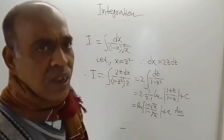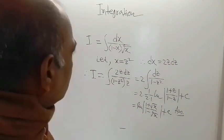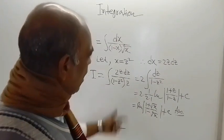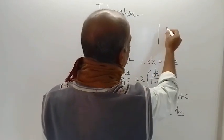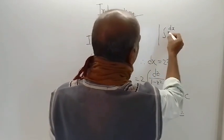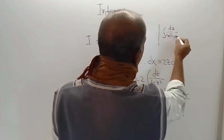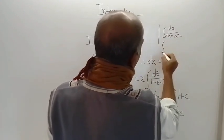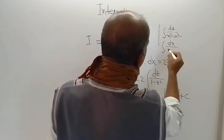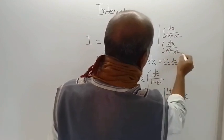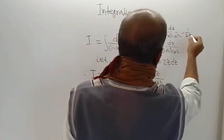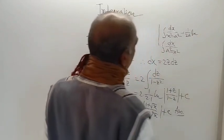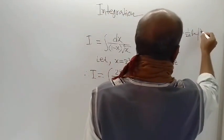Though initially the problem looks complicated. And which form have we used here? There are two forms: integration of dx divided by a square minus x square. This is one form. Another form is dx divided by x square minus a square.